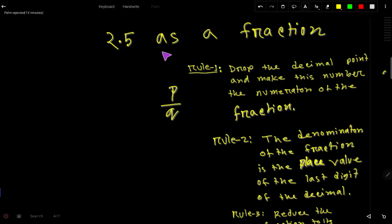2.5 as a fraction. This is a decimal number and we would like to convert this decimal number to fraction. Every fraction has numerator and denominator. So to convert this number as fraction we have to determine the numerator then denominator.